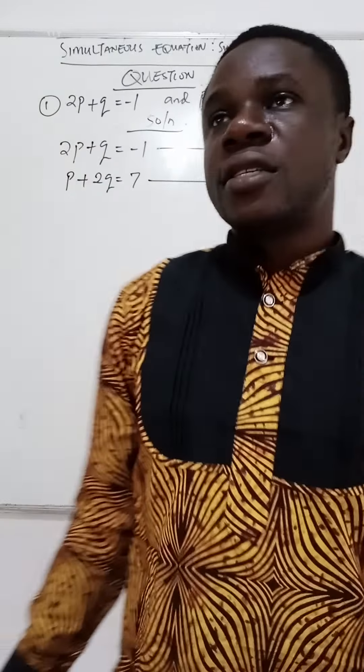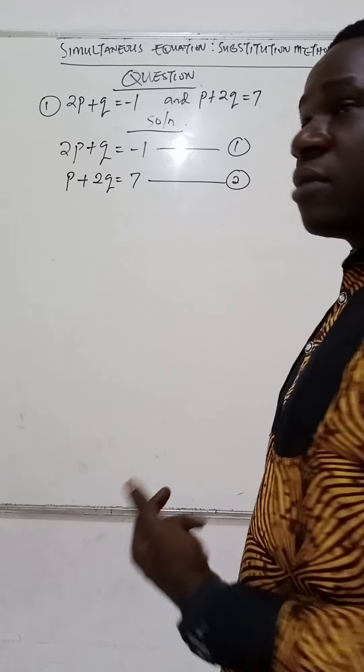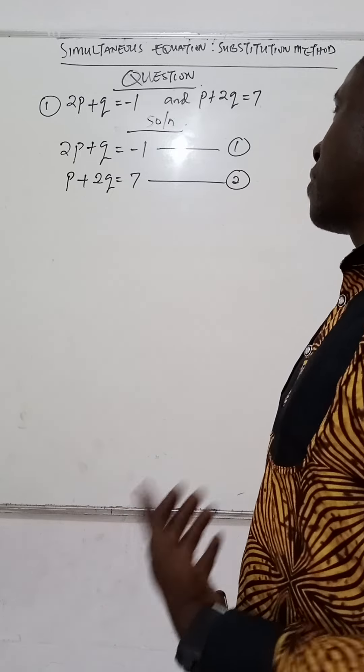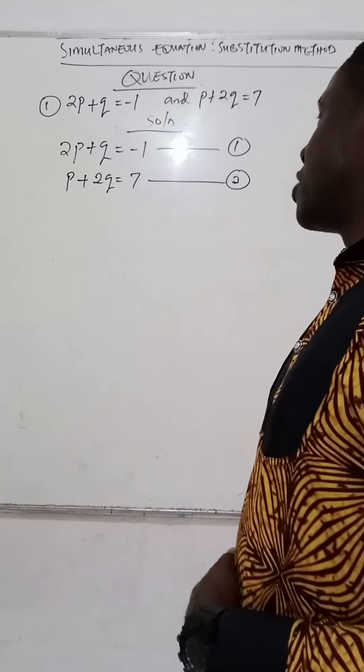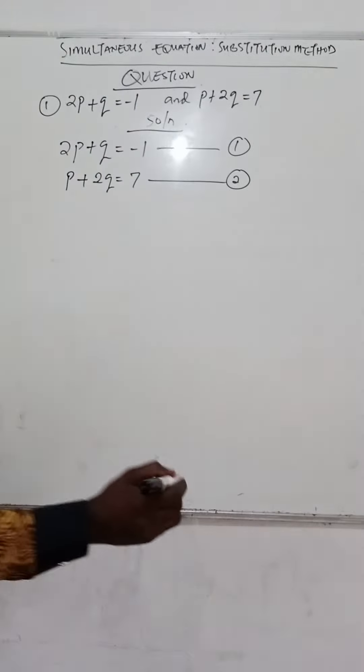In this case, you can make any of the variables the subject of the formula. Let's consider equation 1 for instance. If we decide to make q the subject of the formula in equation 1, we'll have from equation 1: q = -2p - 1.